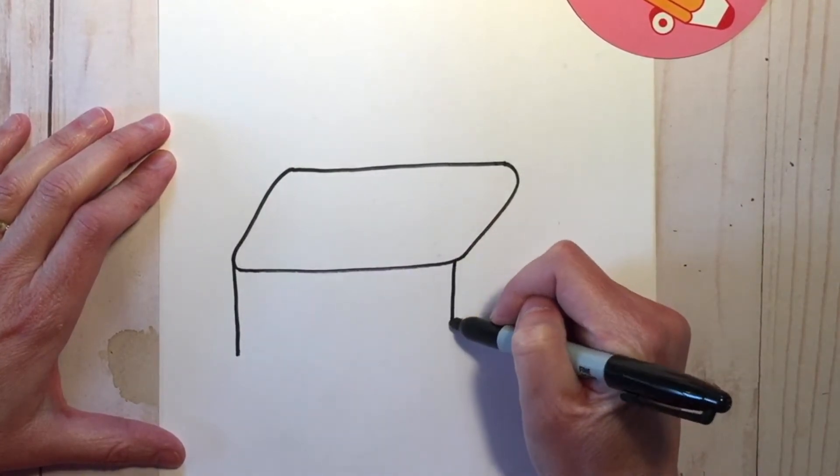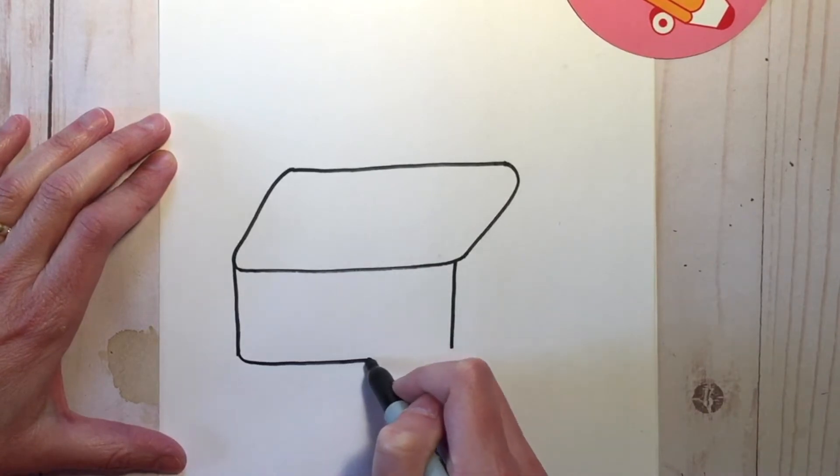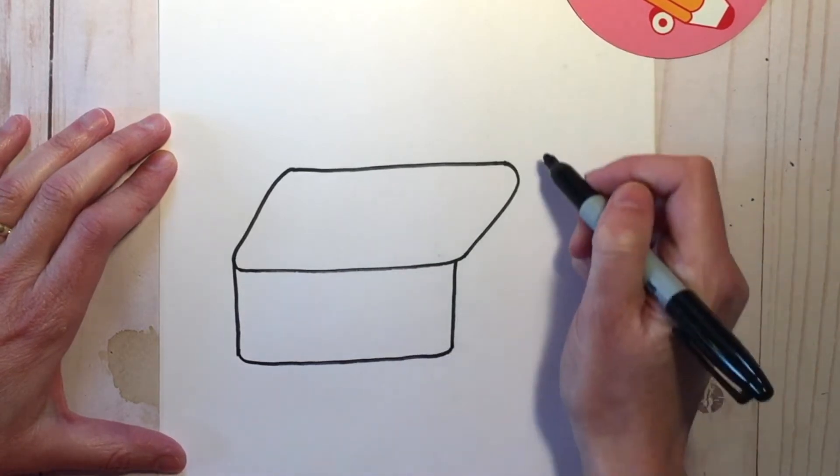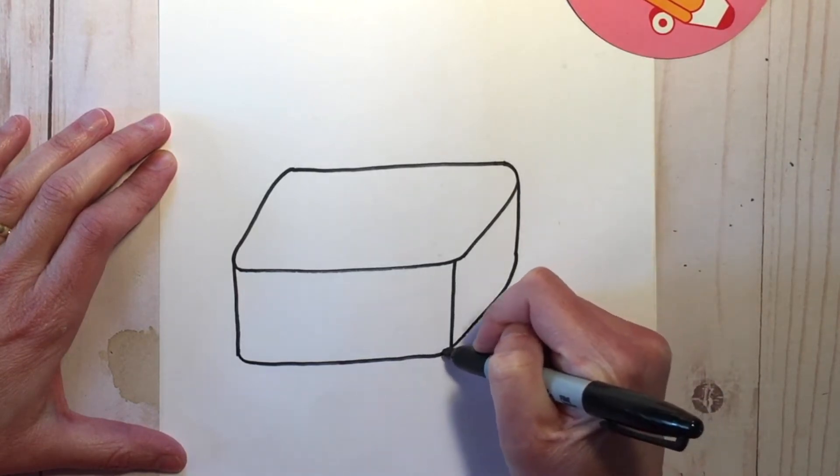Now we're going to do a straight line down from each corner, connect with the rounded corners. Starting here we're going to go down that far and then connect here.